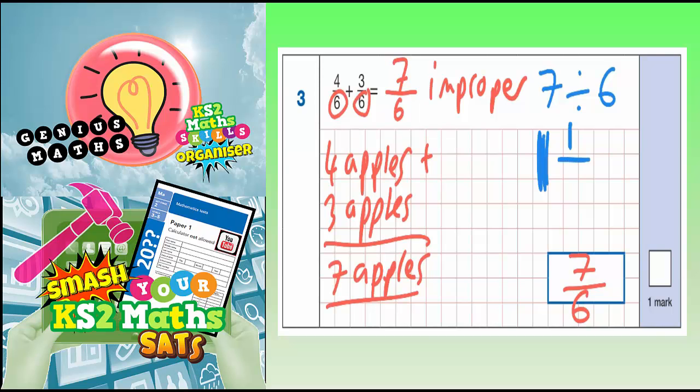And because we're dealing with sixths, you just keep the same denominator. So it's 1 whole, remainder 1 sixth.